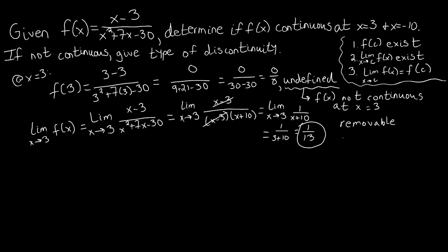When dealing with a rational function and factoring, we're able to cancel out common factors. We remember from college algebra and pre-calculus that when we can cancel out factors in a rational function, that means there's a hole — which is why we call removable discontinuity a hole. So at x=3, our function value is undefined but the limit exists, making this a removable discontinuity.